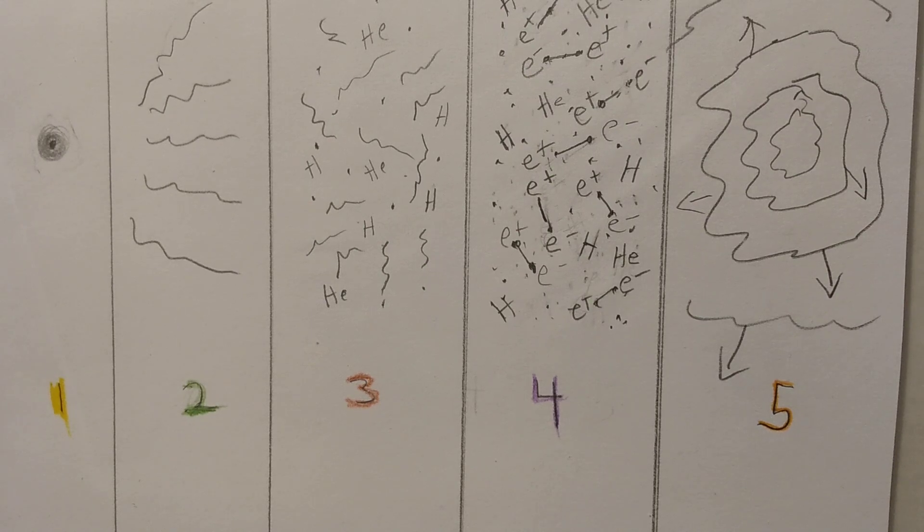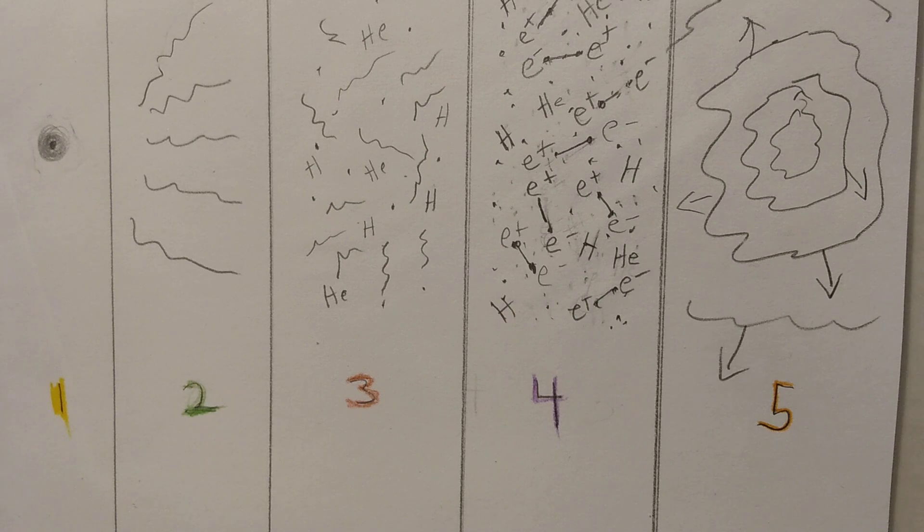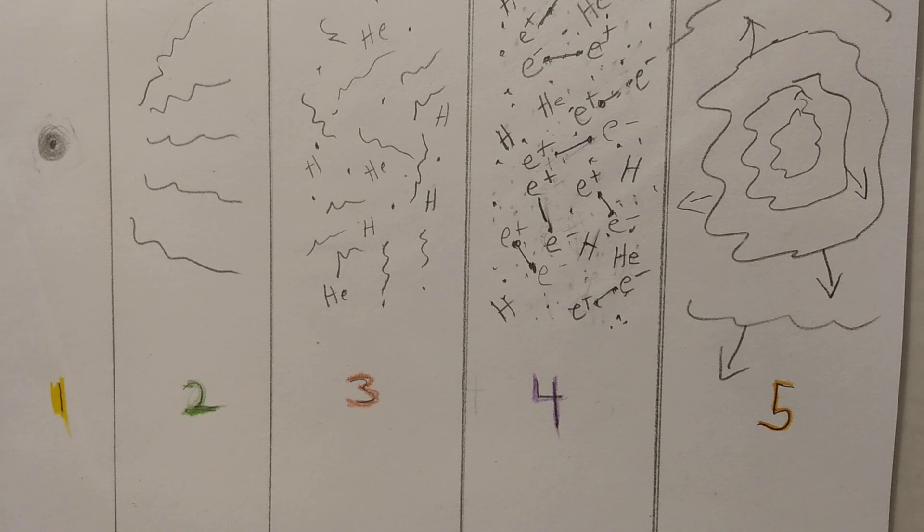Point 2: Big Bang was a release of photon energy. Point 3: Photons through pair conversion created space-time and both the fundamental particles and first atoms of hydrogen and helium.